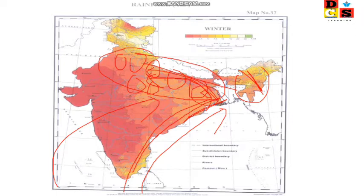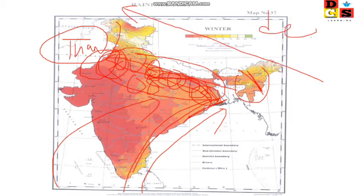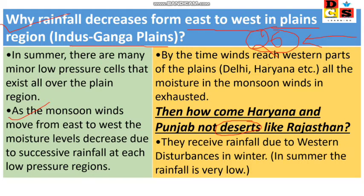The most rainfall occurs first in the West Bengal region, then the Bihar region, then the Uttar Pradesh region. The moisture level decreases due to successive rainfall over each low-pressure region. By the time the wind reaches the western part of the plains — like Delhi and Haryana — all the moisture of the monsoon winds is exhausted. Delhi, Haryana, Punjab — the moisture is all finished.